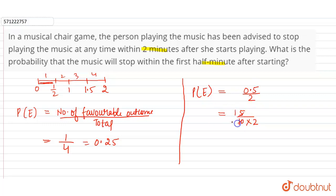So 5 into 1 is 5, 5 into 2 is 10. So probability will be equal to 1 by 4 or 0.25. And this is the required answer for the given question.